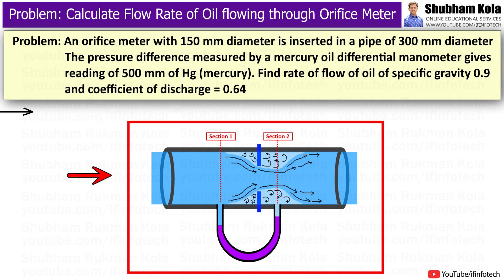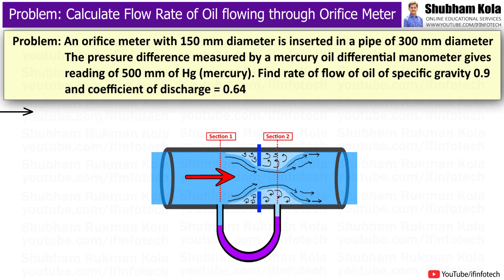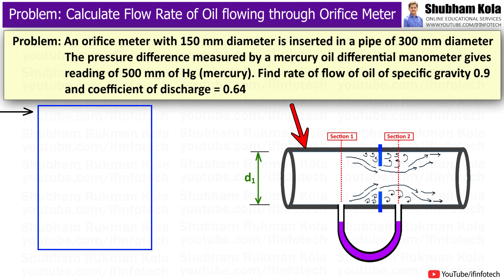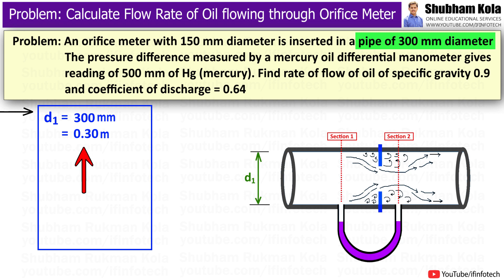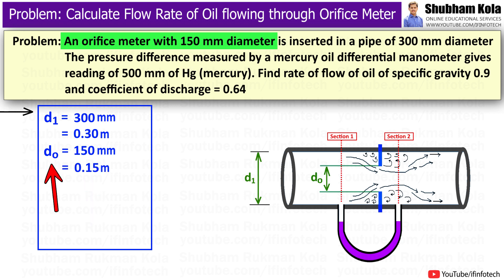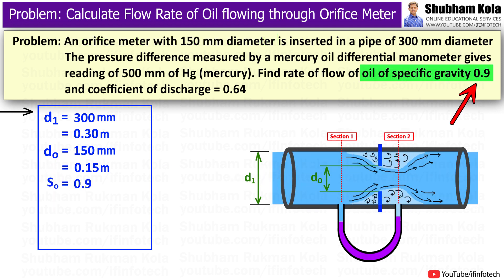To solve this problem, I will first draw the diagram of the orifice meter and note the given data. The pipe diameter is 300mm, i.e. 0.3m, denoted as D1, in which the orifice plate is placed. The orifice diameter is 150mm, i.e. 0.15m, denoted as D0. The lighter fluid is oil, whose specific gravity is given as 0.9.